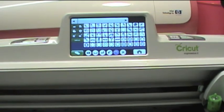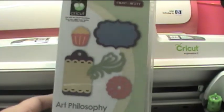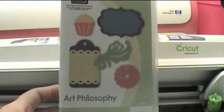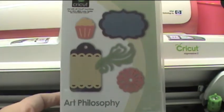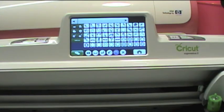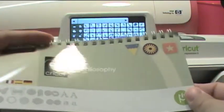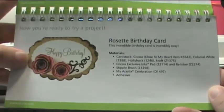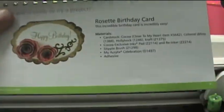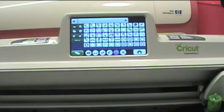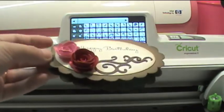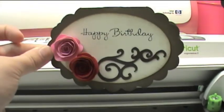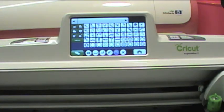I've got my Expression 2 out and the cartridge that we are going to use is the Art Philosophy cartridge. If you don't have this, I would recommend looking into it because this is an awesome cartridge. But you can take what we're learning with this video and you can apply it to cartridges you may already own. Here's the book and the project we're going to do, we're just going to go ahead and make this rosette birthday card. I love these flowers. These are all images cut from the Art Philosophy cartridge, and it's all using the basics that we just learned in video one.